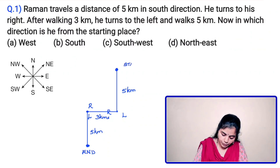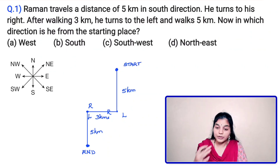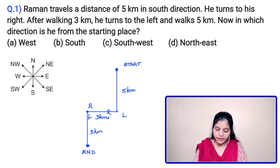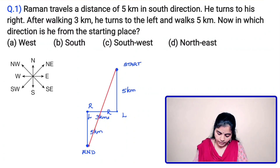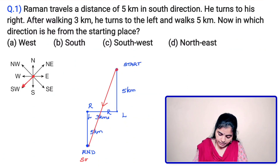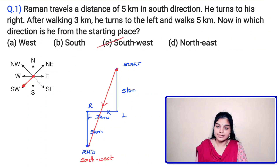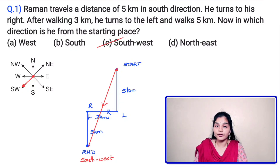This is the starting point and this is the end point of Raman. The question is to identify in which direction Raman is from his starting place. From start to end, if I draw a line, the direction is southwest. It may look like south, but look carefully — we have eight different directions, and in the options they have given four cardinal directions. So this direction from the starting point to the end point is the southwest direction.